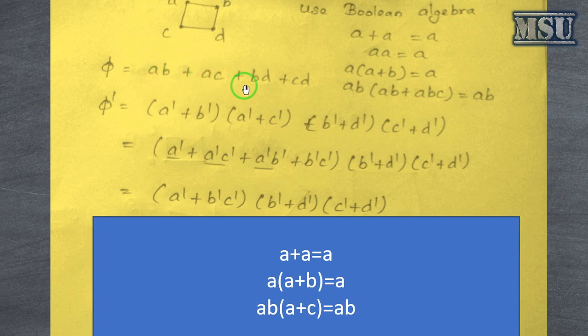So a, b are adjacent, a, c, b, d and c, d and take a complement of this.